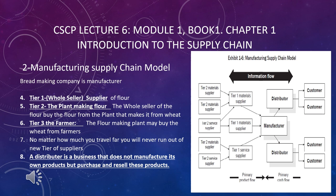Tier 3 may be the farmers — the flour-making plant may buy the wheat from the farmer. One important thing to note is that no matter how far you travel, you will never run out of new tiers of suppliers. Another important thing to note: a distributor is a business that does not manufacture its own products but purchases and resells these products.